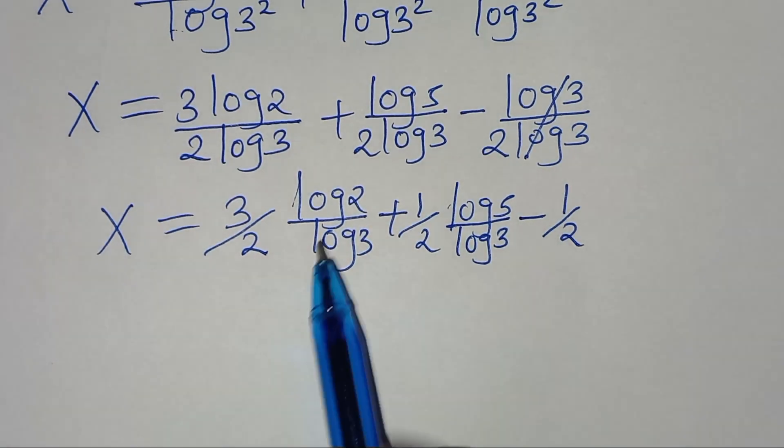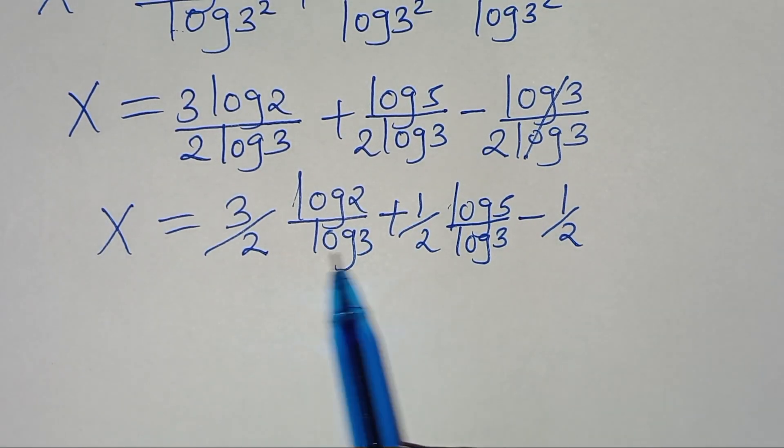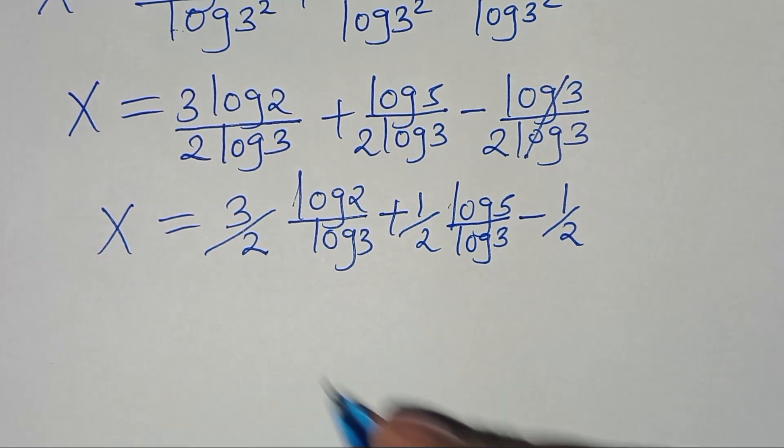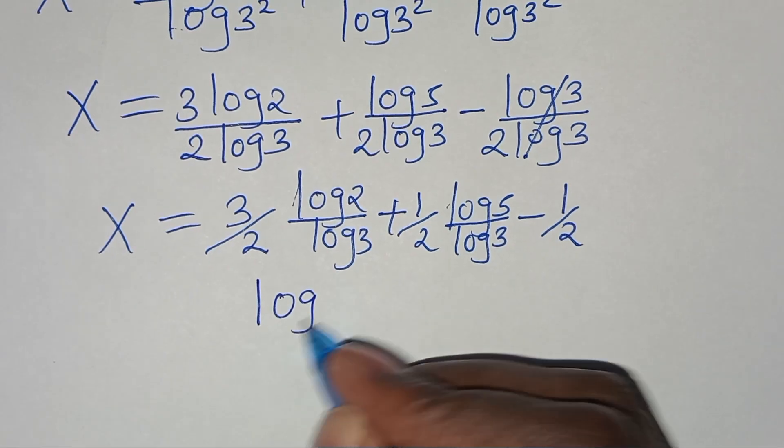Now log 2 divided by log 3 and log 5 divided by log 3 are in the form of log a divided by log b.